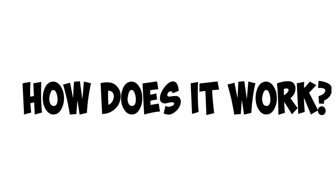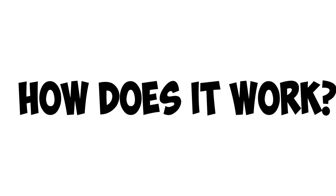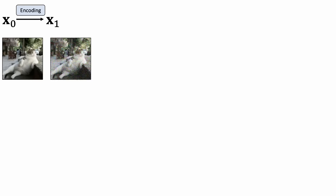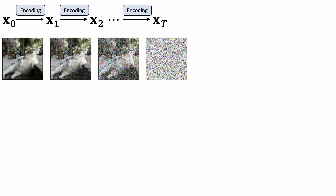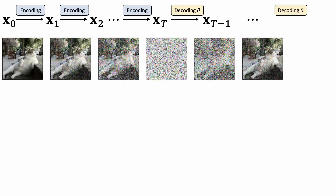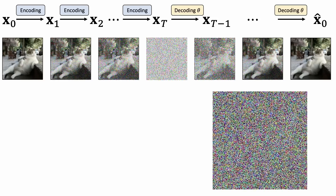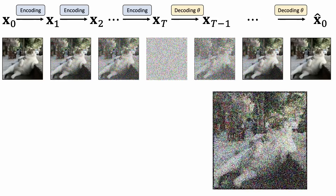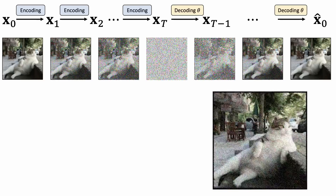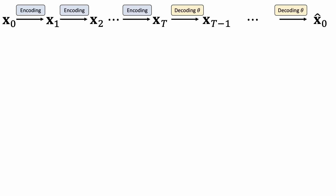But how does Sora work? Imagine adding Gaussian noise many times to an image — we can convert it to pure noise. We can train the denoising network to progressively remove the noise and generate a clean image. This is how we train the denoising network.